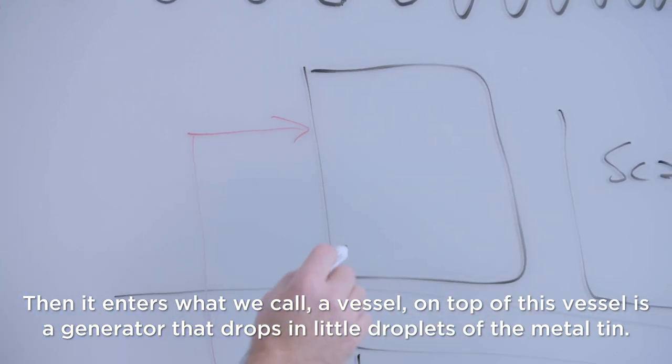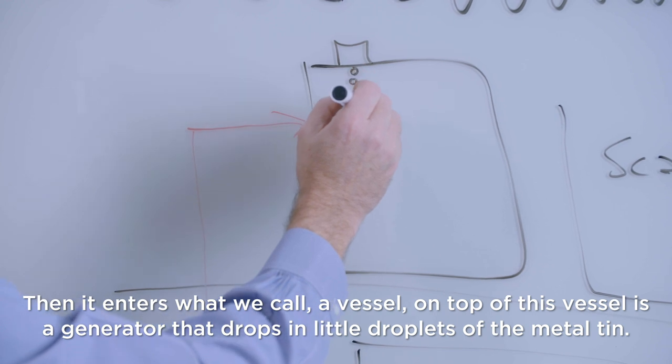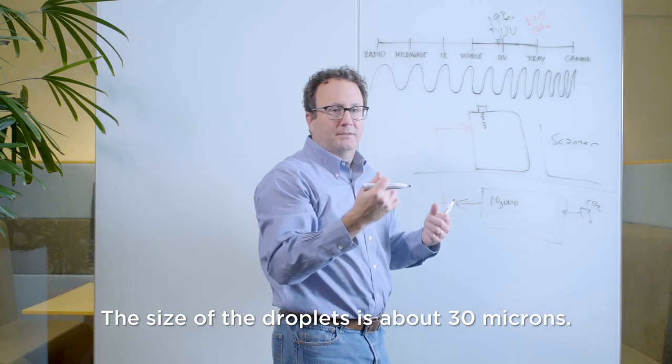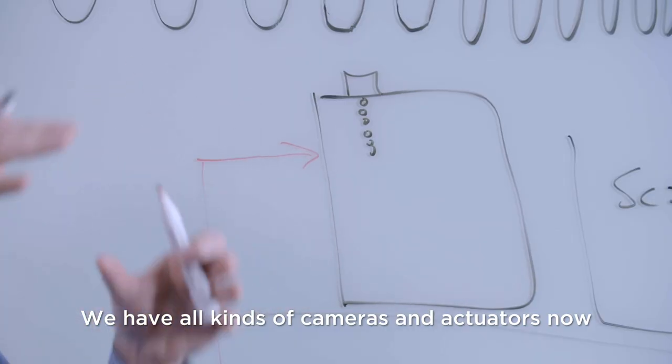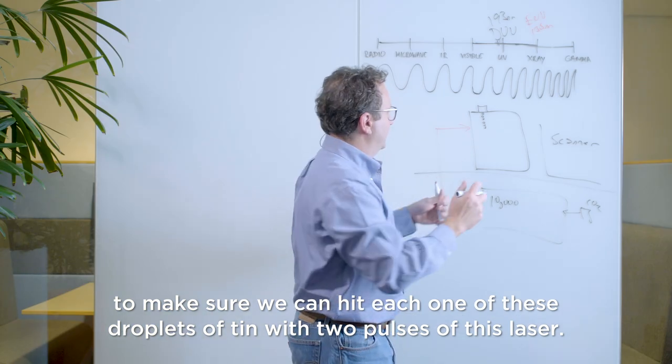Then it enters what we call a vessel. On top of this vessel is a generator that drops in little bitty droplets of the metal tin. The size of the droplets is about 30 microns. We have all kinds of cameras and actuators to make sure we can hit each one of these droplets of tin with two pulses of this laser.